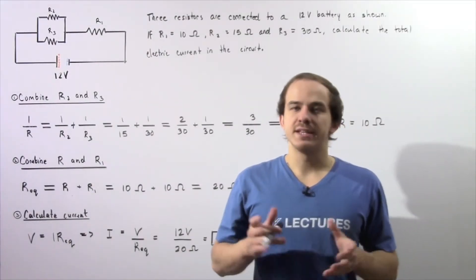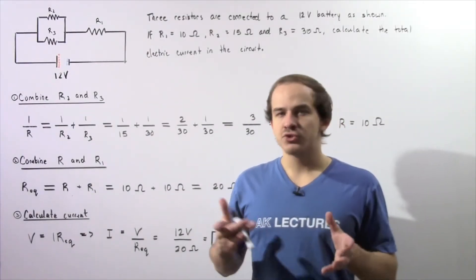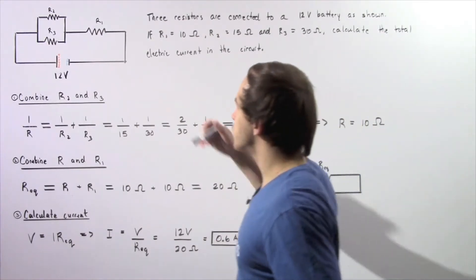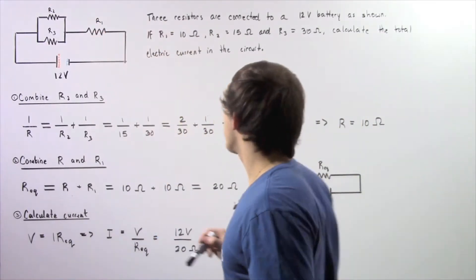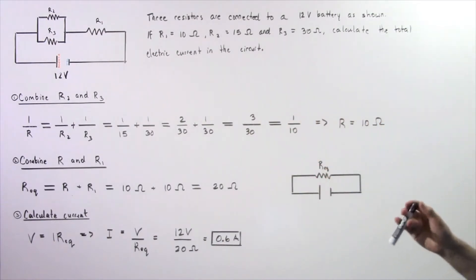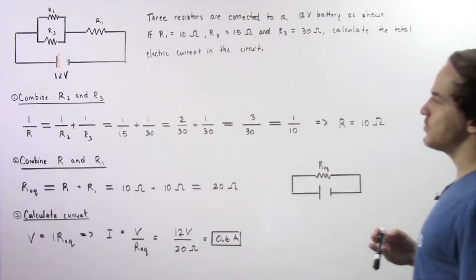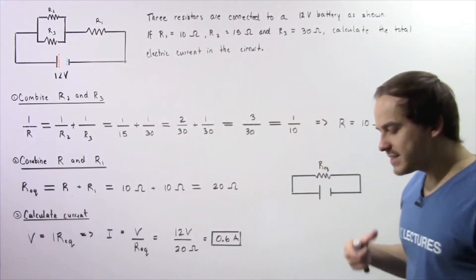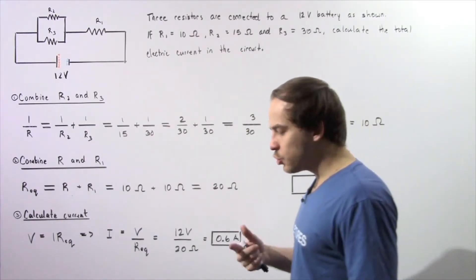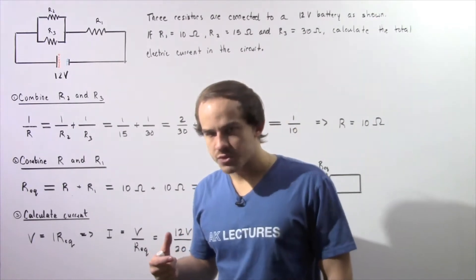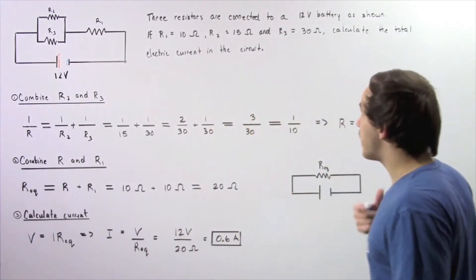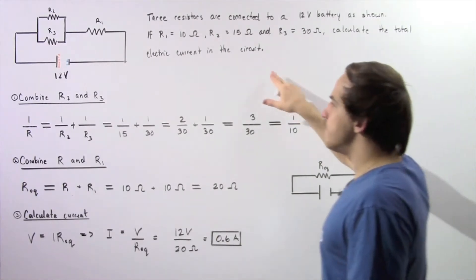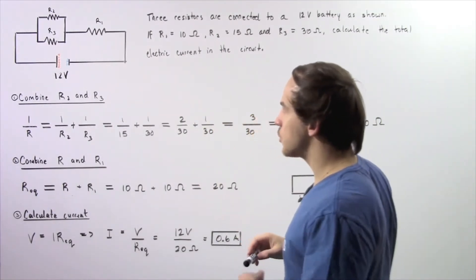Let's examine the following example that deals with electric circuits and resistors. Three resistors R1, R2, and R3 are connected to a 12 volt battery as shown in the following diagram. Now if R1 is given by 10 ohms, R2 is given by 15 ohms, and R3 is given by 30 ohms, calculate the total electric current found in our electric circuit.